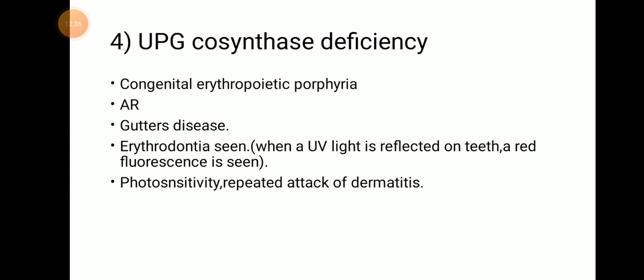UPG1 or HMB, which is a linear tetrapyrrole molecule, cyclizes to form UPG3 in the presence of UPG3-cosynthase. UPG3-cosynthase deficiency results in congenital erythropoietic porphyria (CEP), which shows autosomal recessive inheritance. This is also known as Günther's disease. The important point is that Günther's disease shows erythrodontia as a symptom — when UV light is reflected on the teeth of the patient, red fluorescence is seen. Photosensitivity and repeated attacks of dermatitis are also symptoms.